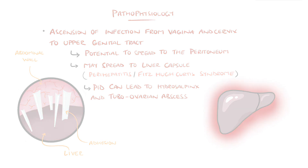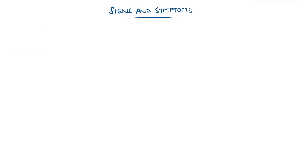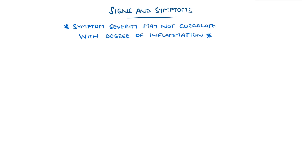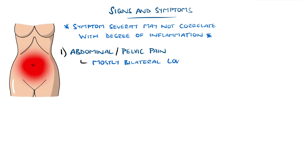The signs and symptoms are variable depending on the organs involved, and bear in mind that the severity of the inflammation may not correlate with the severity of symptoms. Typical symptoms of PID include lower abdominal or pelvic pain, which can be present particularly if the fallopian tubes are affected, and is often bilateral but may be unilateral.